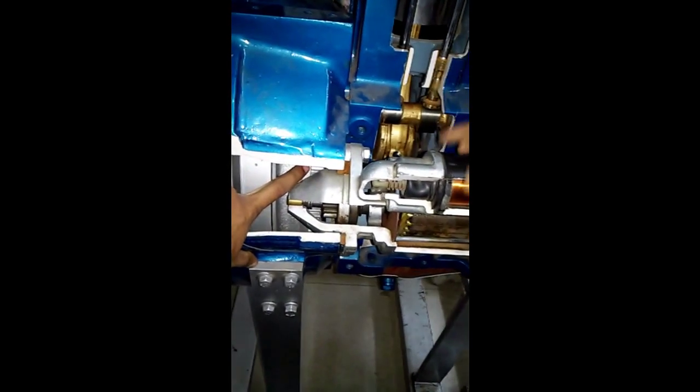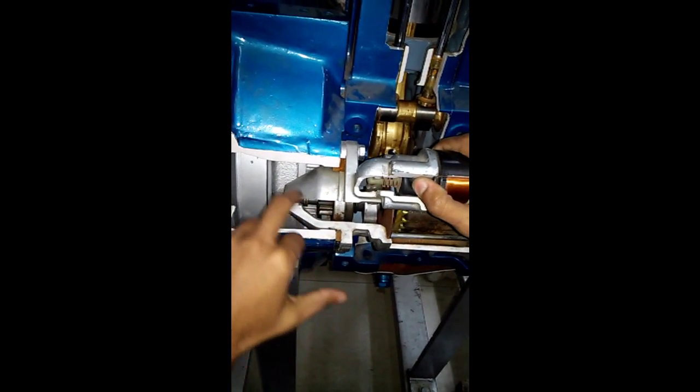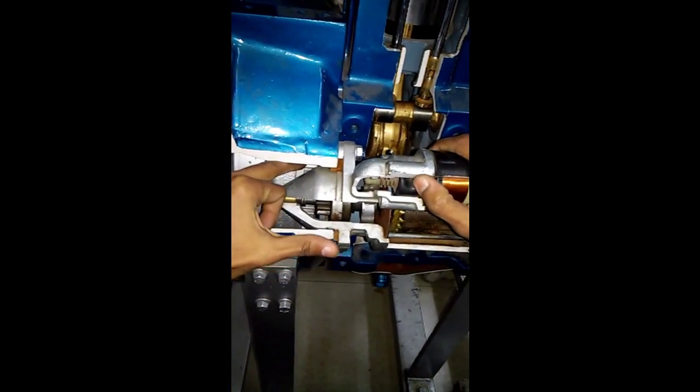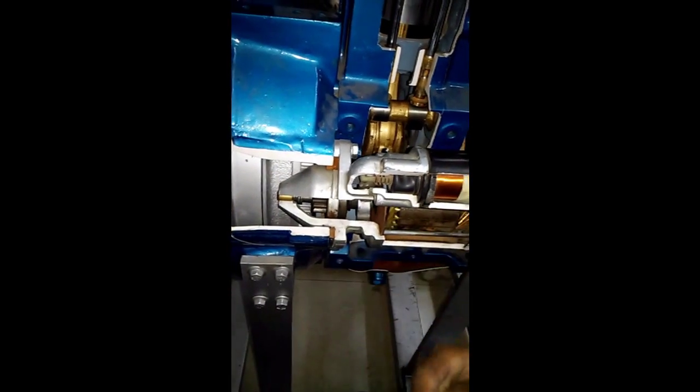The flywheel has a ring gear around its circumference. So when the pinion meshes with the teeth of this flywheel gear, then the flywheel will rotate.